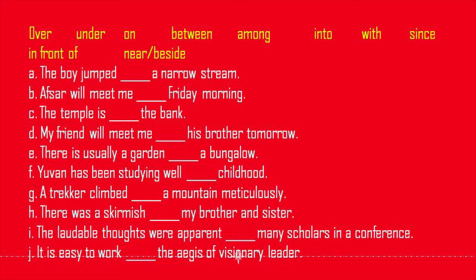Sentence 4: A trekker climbed a mountain meticulously. Sentence 5: There was a skirmish. Sentence 6: The lovable thoughts were apparent among many scholars in conference.